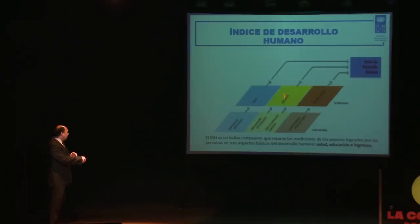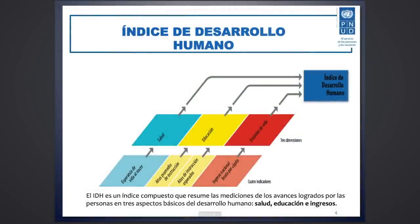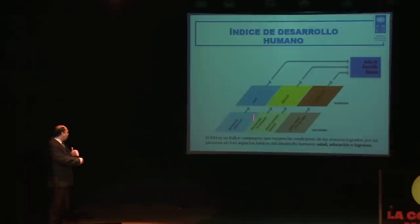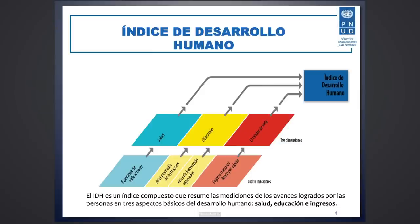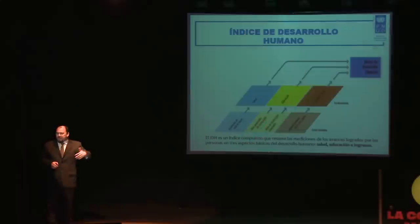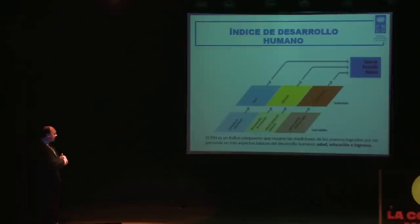Para medir la dimensión de educación, tenemos dos indicadores: en primer lugar, años promedio de instrucción, que mide básicamente el presente y el pasado; y años esperados de instrucción, que apunta al futuro. Este índice es un índice compuesto que básicamente nos permite ver la evolución que tienen los países en estas tres dimensiones. Vamos a ver que la nutrición tiene mucho que ver con estos temas.